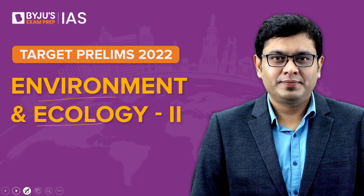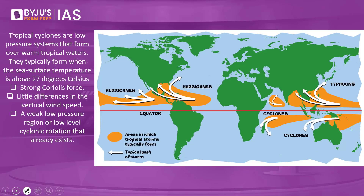Let's get started and look into this article on tropical cyclones. What are tropical cyclones? They are low pressure systems that form over warm tropical waters. They typically form when the sea surface temperature is about 27 degrees Celsius. One key parameter is that the oceanic water should have a temperature of 27 degrees Celsius.